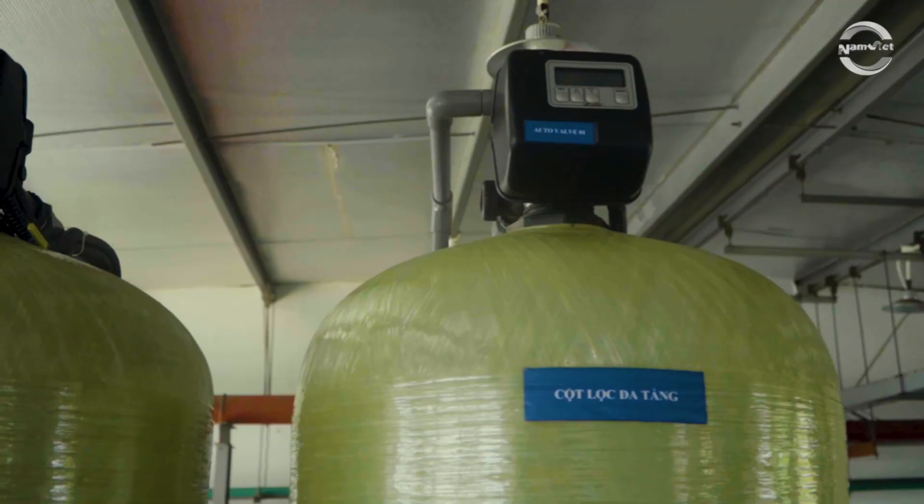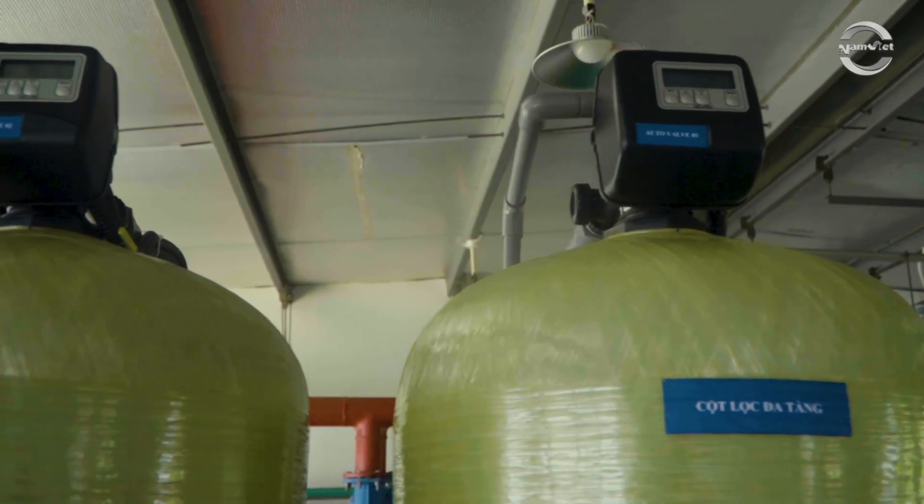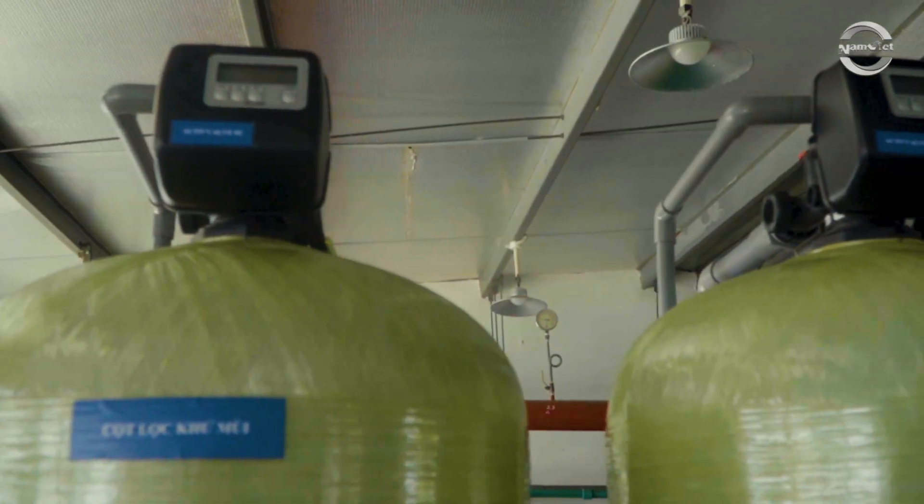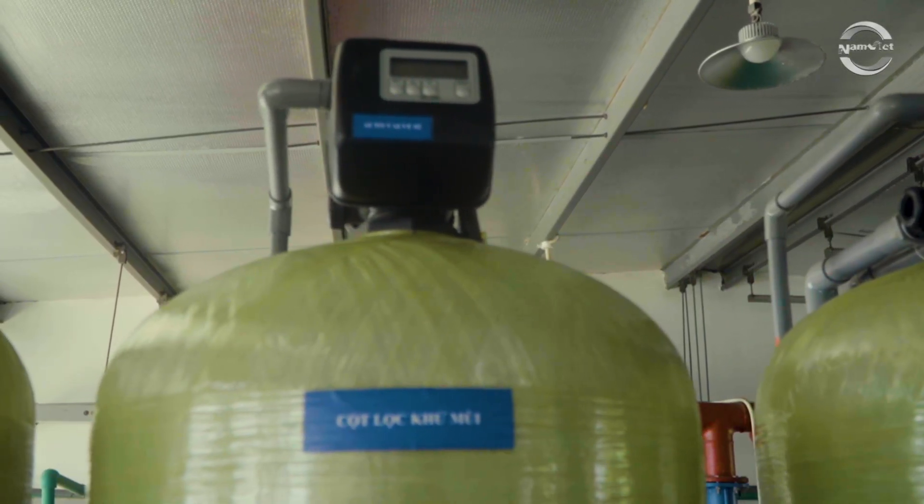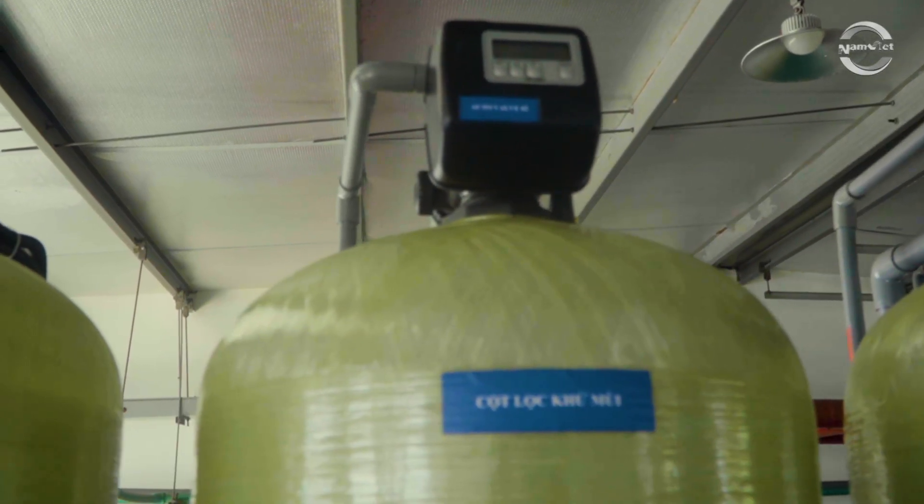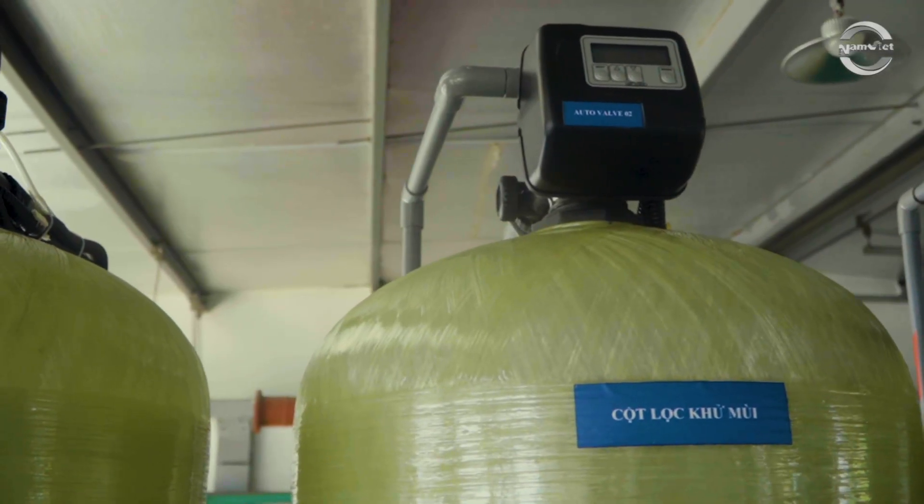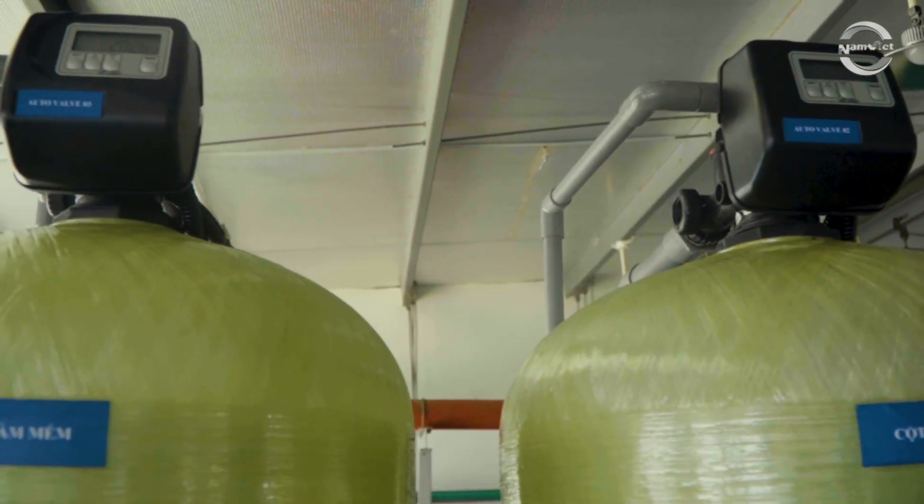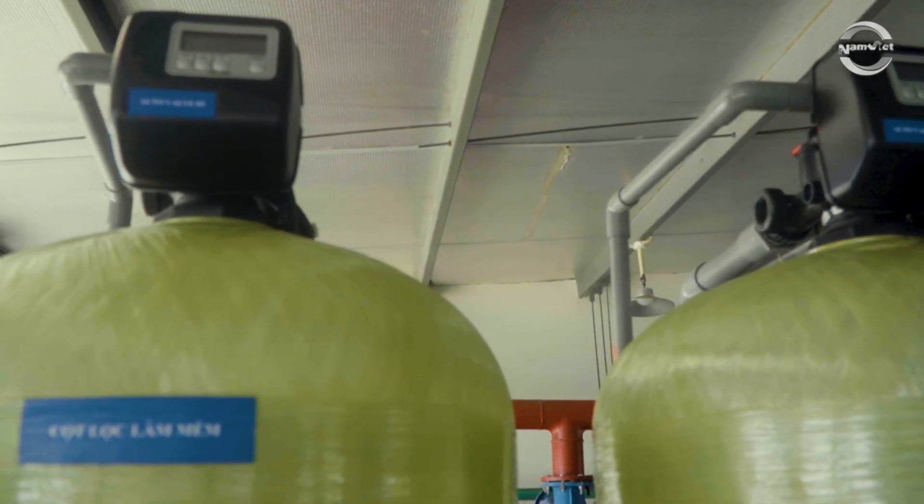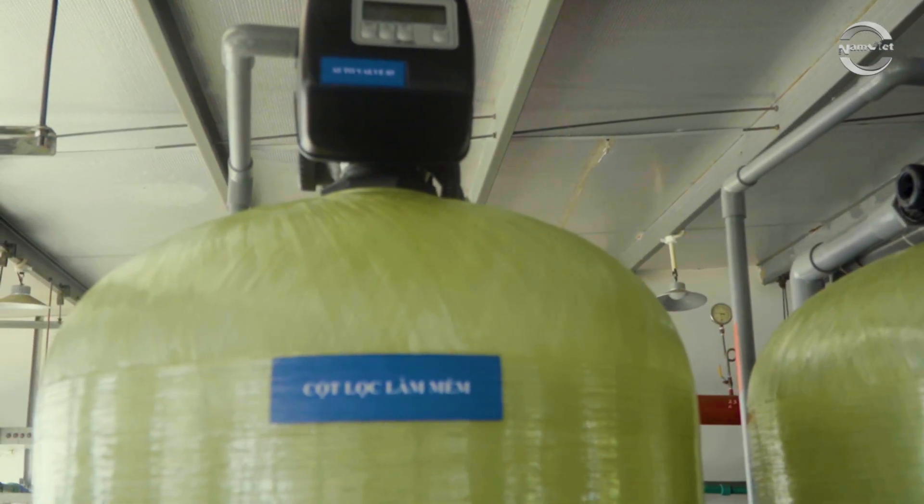The multi-layer filter column removes suspended solids and remaining turbidity from the water source, reducing sediment. The activated carbon column helps deodorize the water by absorbing organic matter, and protects the RO membrane from the oxidative effects of residual chlorine. The softening column removes calcium and magnesium ions to reduce inorganic scaling within the RO system.